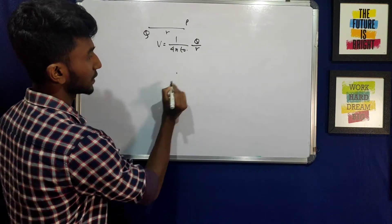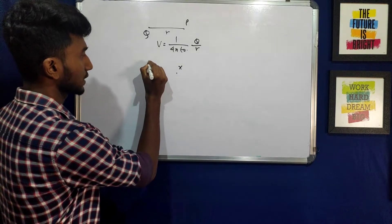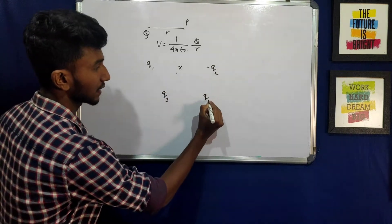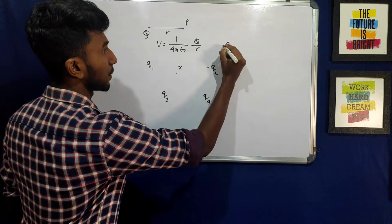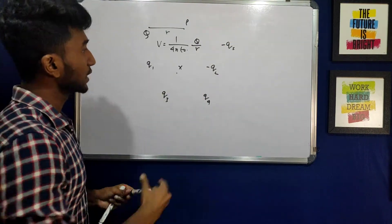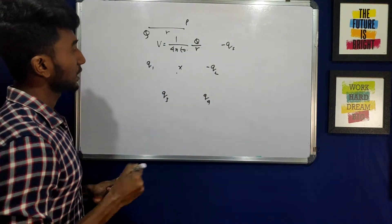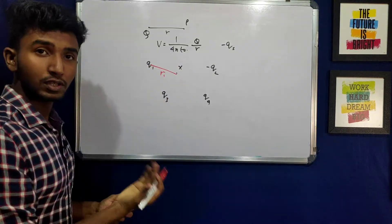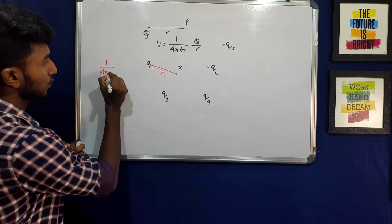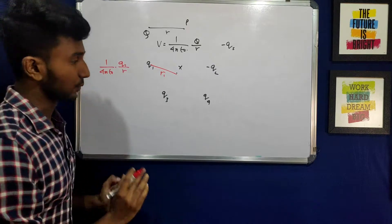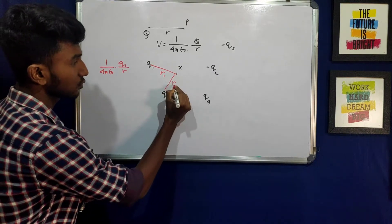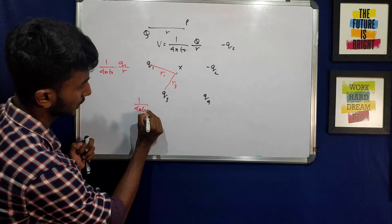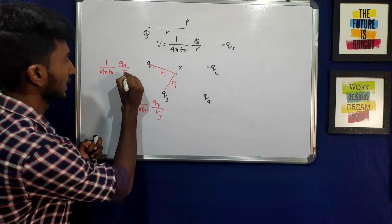At point P, there are multiple charges: q1, minus q2, q3, q4, and minus q5. X is the point, and around this point there are many charges. Considering charge q1, the distance from q1 to point X is r1. So the potential due to q1 at point X is calculated.